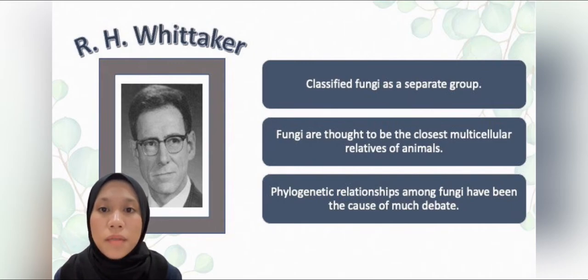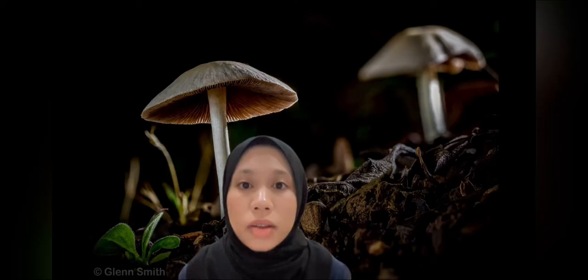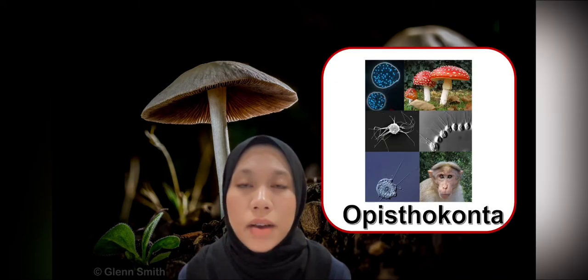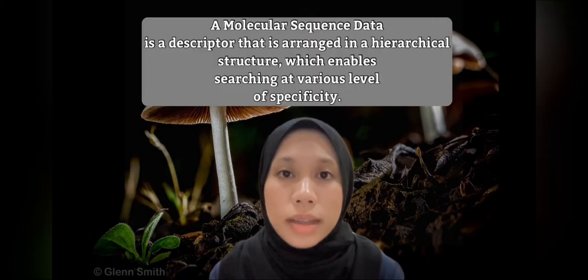His reasoning was that fungi are the only type of multicellular organism that is saprotrophic. Currently, fungi are thought to be the closest multicellular relative of animals because fungi and animals are classified under the same supergroup, Opisthokonta. Also, phylogenetic relationships among fungi have been the cause of much debate, and understanding of fungal phylogeny is going through many revisions based on molecular sequence data.